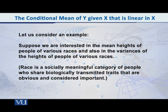Let us consider an example. Suppose that we are interested in the mean heights of the people of various races, and also we are interested in the variances of the heights of the people of various races. Race is of course a socially meaningful category of people who share biologically transmitted traits that are quite obvious and are considered important. For example, people in the African continent have different biological traits from other continents, and so on and so forth. So if our problem or interest is in finding the mean heights of people of different races and also finding the variances in their heights,